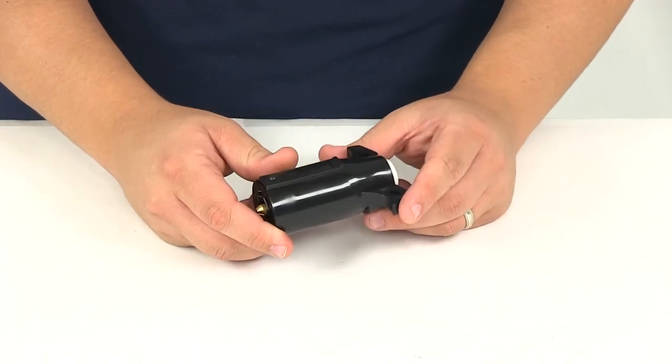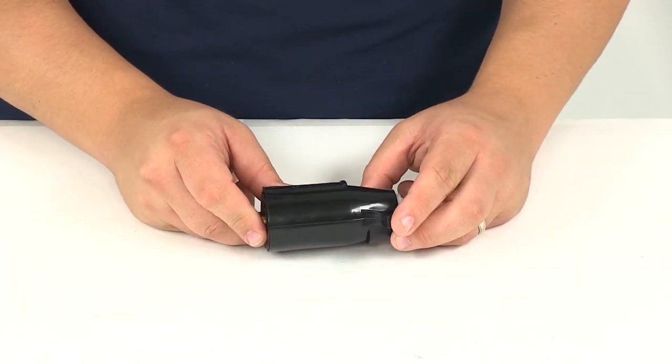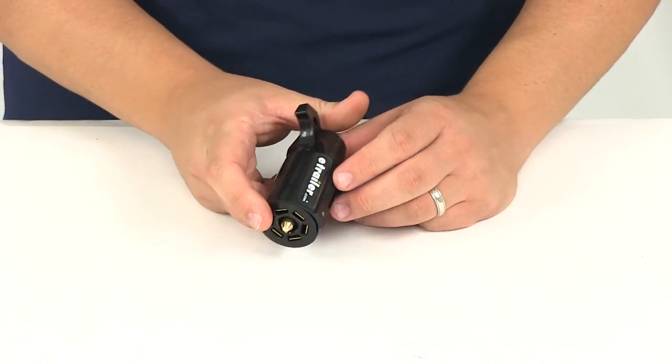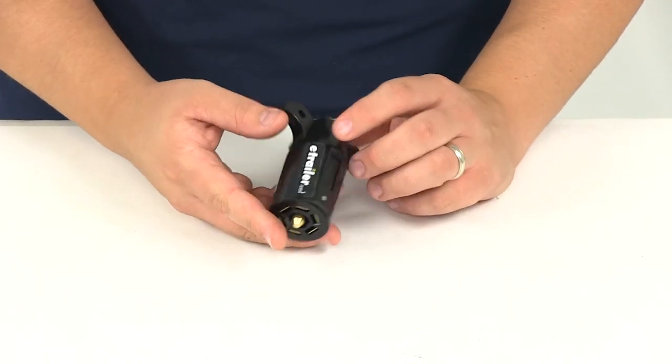That concludes our review of part number PK-12706, the Pollock Black Plastic 7-Pole RV Style Trailer Connector.